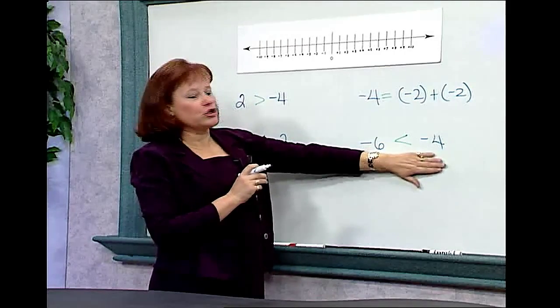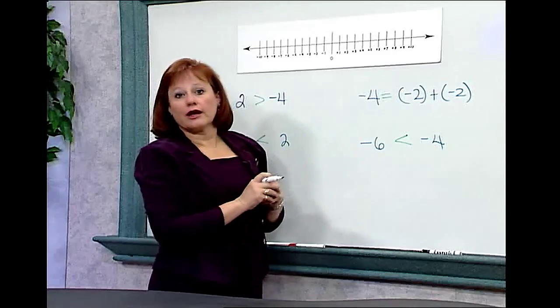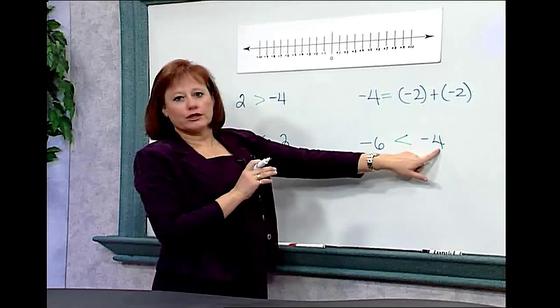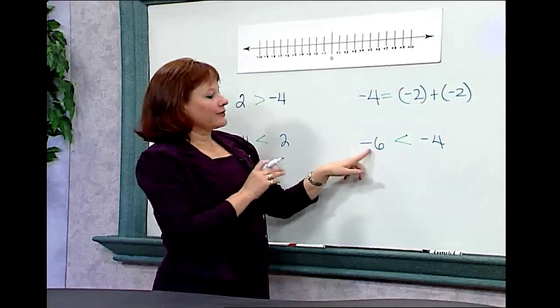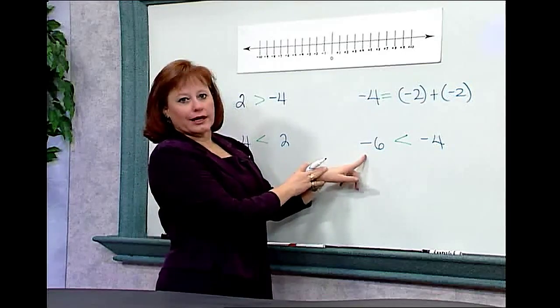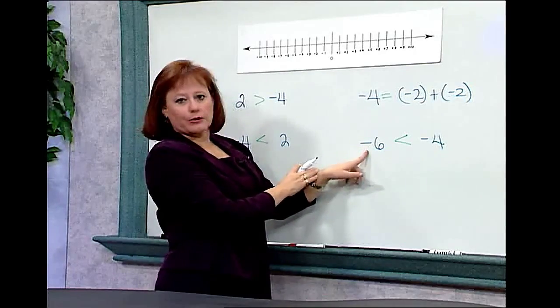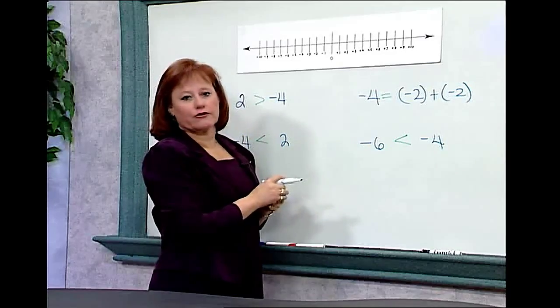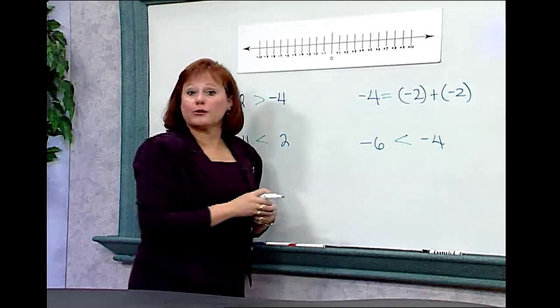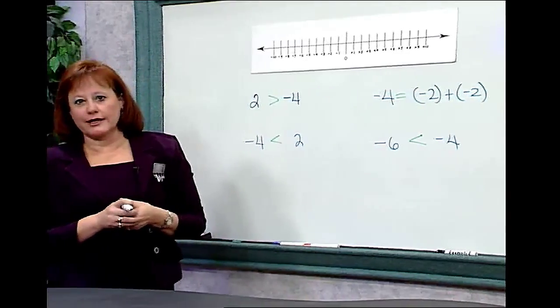To help you remember this, you might consider thinking about money that you owe. Owing negative 4 dollars is not as big a debt as owing negative 6. You're further in the hole with negative 6, so it is a smaller number. It is to the left of negative 4 on the number line. Using the number line can be very helpful when you're comparing sign numbers.